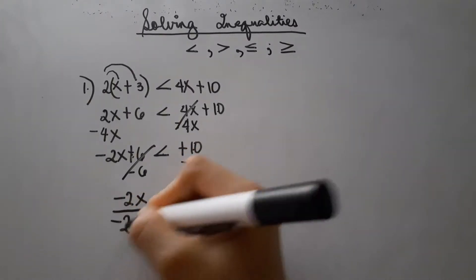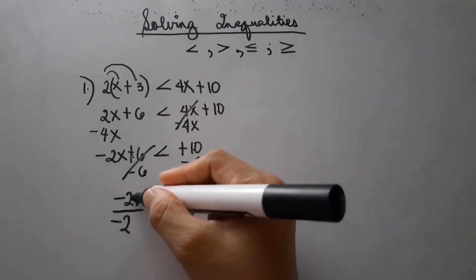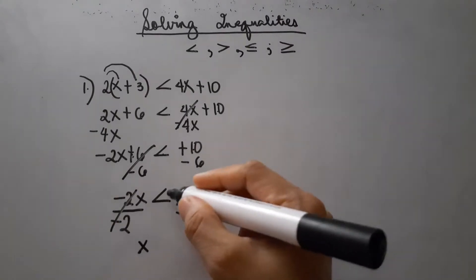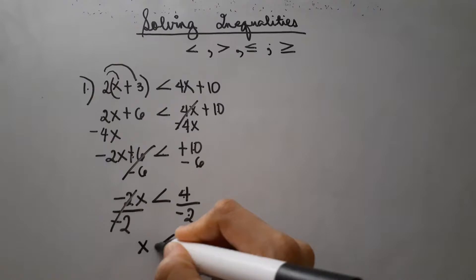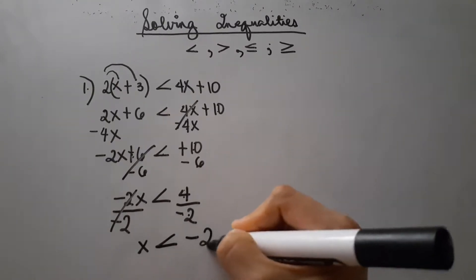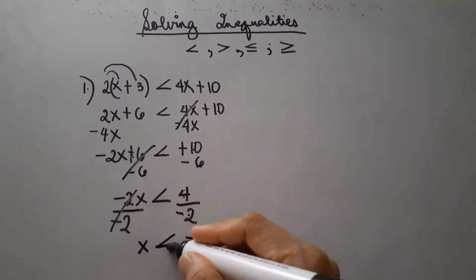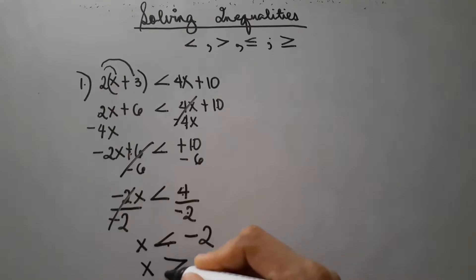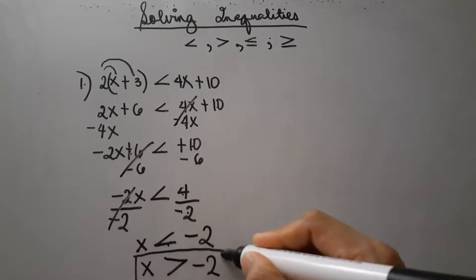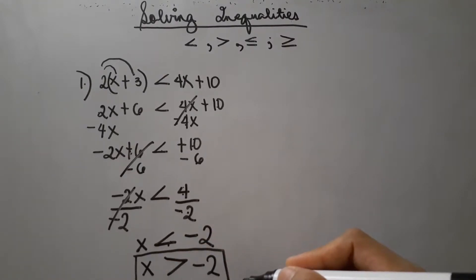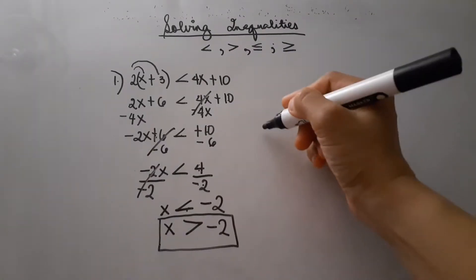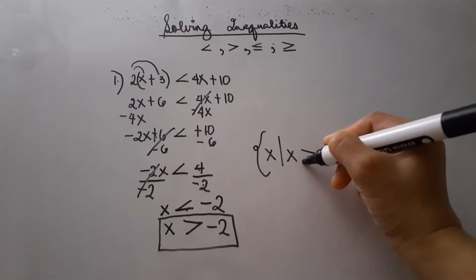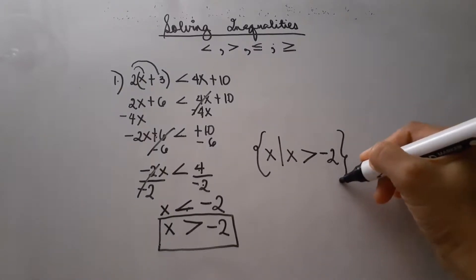Then we divide each side by negative 2, and the answer is x is greater than negative 2. Therefore, we change the direction of the inequality symbol since we divided by a negative number. We can write the solution set as: the set of x such that x is greater than negative 2. And this is the answer.